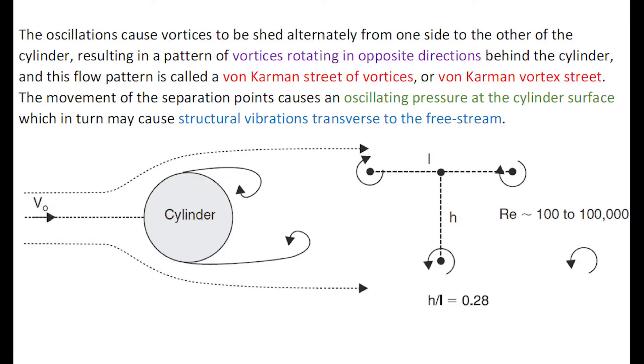The oscillations cause vortices to be shed alternately from one side to the other of the cylinder, resulting in a pattern of vortices rotating in opposite directions behind the cylinder. This flow pattern is called the von Kármán vortex street or von Kármán street of vortices.